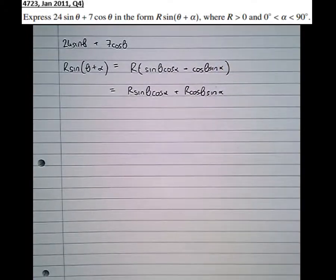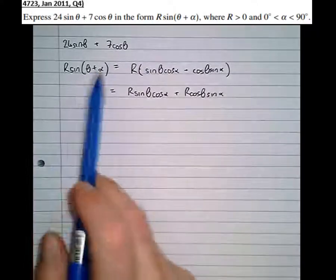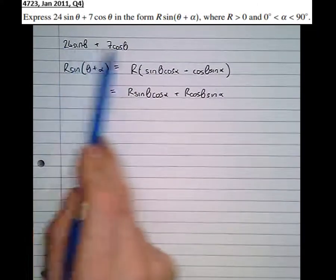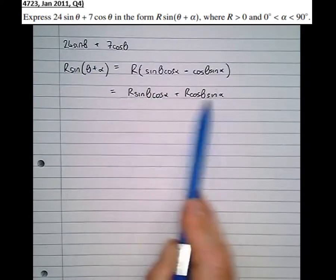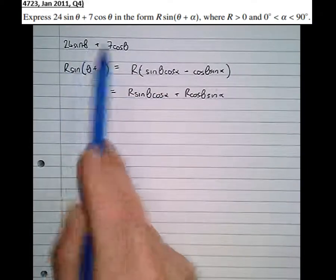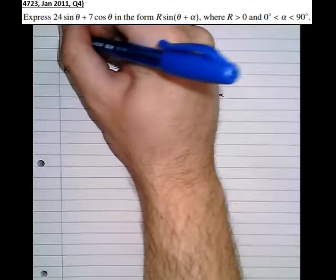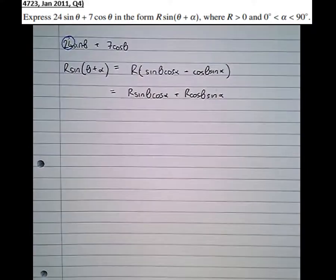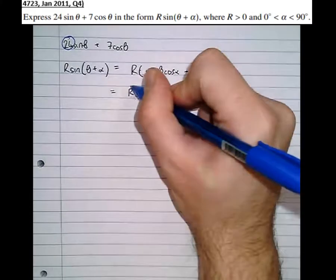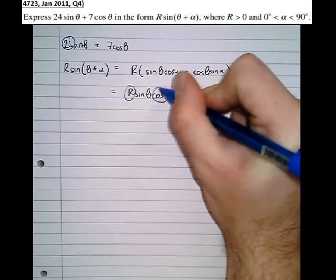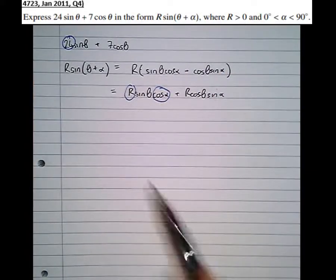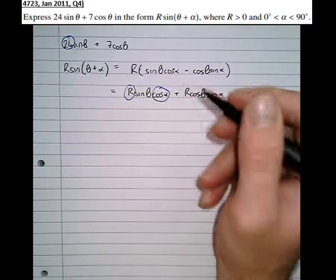This is the tricky part. If we express the original in this expanded form, then the two expressions must be equal. So this sine theta here has been multiplied by 24, and this sine theta here has been multiplied by R cos alpha. If these two parts of the expression are truly equal, then 24 must equal R cos alpha.